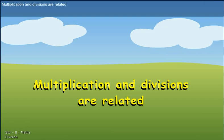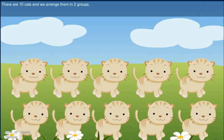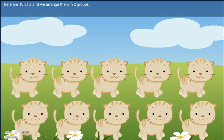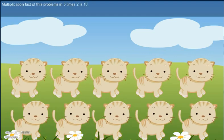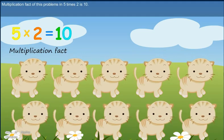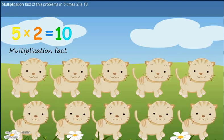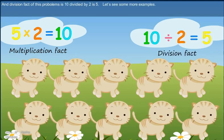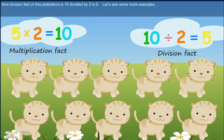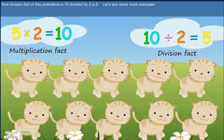Multiplication and divisions are related. There are 10 cats and we arrange them in 2 groups. Make 2 groups of 5 cats each. Multiplication fact of this problem is 5 times 2 is 10. And division fact of this problem is 10 divided by 2 is 5. Let's see some more examples.